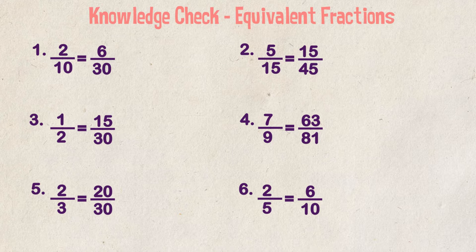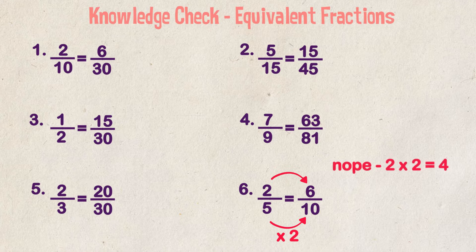Last example, is two fifths equal to six tenths? Looking at our denominator of 5, we would have to multiply it by 2 to get 10. If we multiply our numerator by 2, we get 4, not 6. So these fractions are not equivalent.